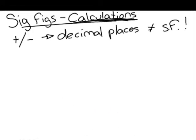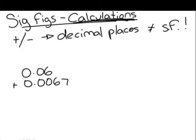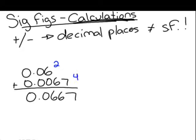I'll do another example. Let's say you have 0.06, and to that you are adding 0.0067. Again, the first one only has two decimal places, and the second one has four. So, your final answer will have two decimal places.